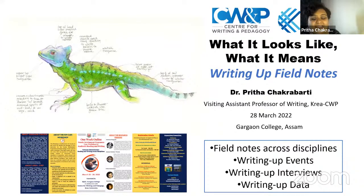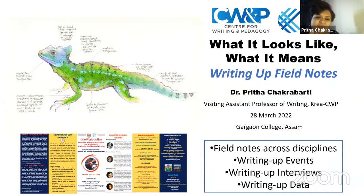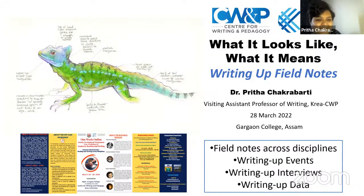For the second section — writing up interviews — say you have conducted an interview, recorded it, and have your transcript. How do you bring it into your work? We discussed that an interview is a genre in itself and academic writing is a different genre, so how do these two things come together? And last but not least, we'll look at writing up data, because while data is often thought of as the realm of quantitative research, qualitative and quantitative methods can actually go hand in hand — that's something I intend to show you.